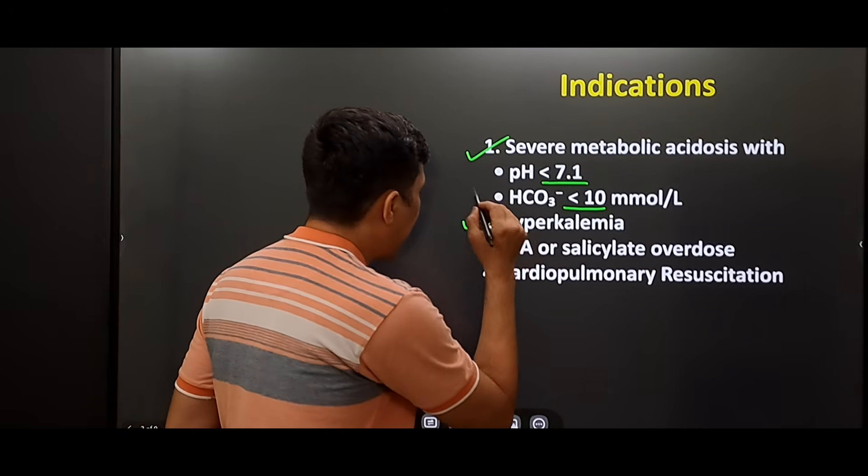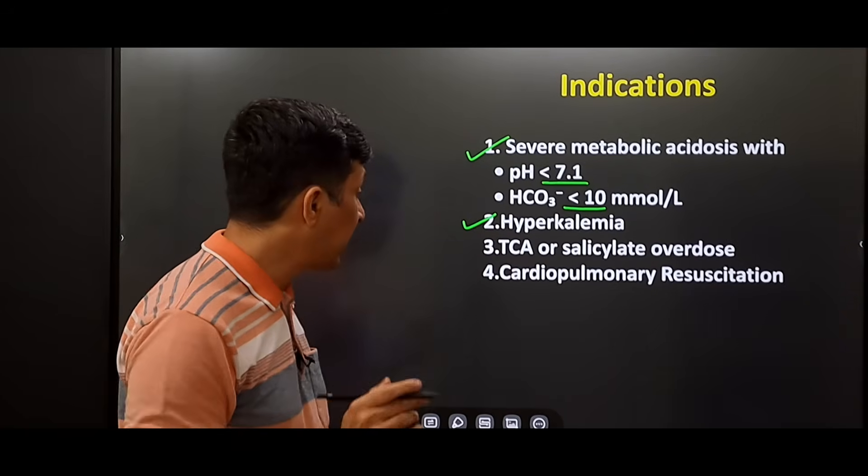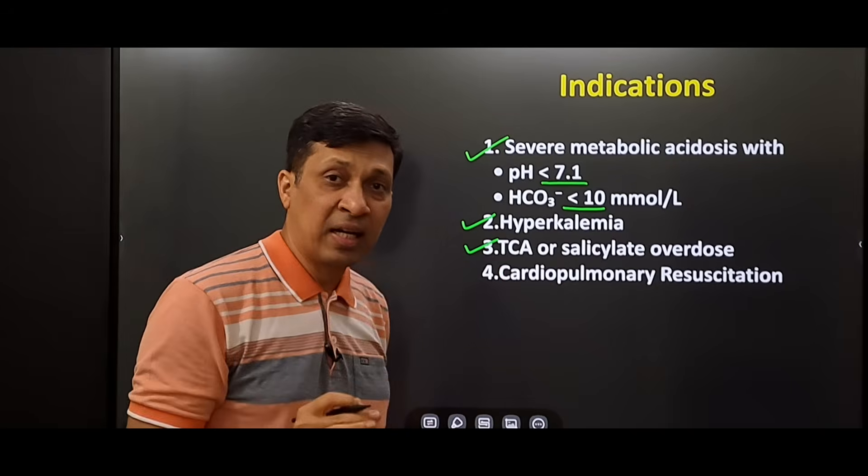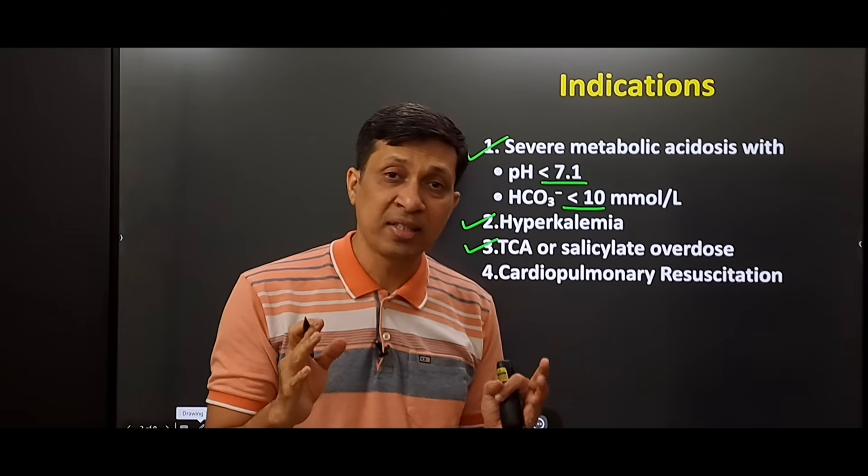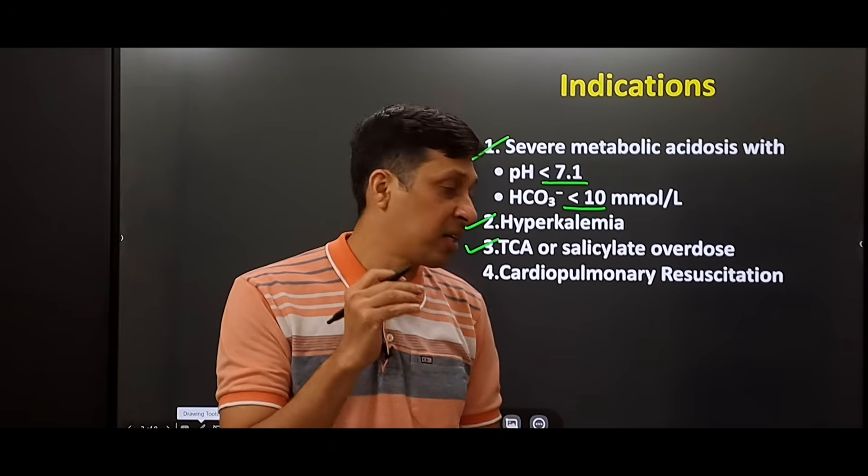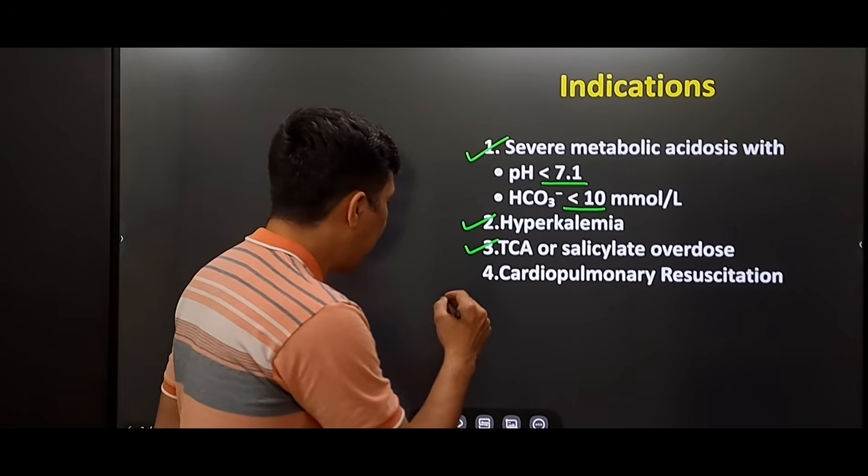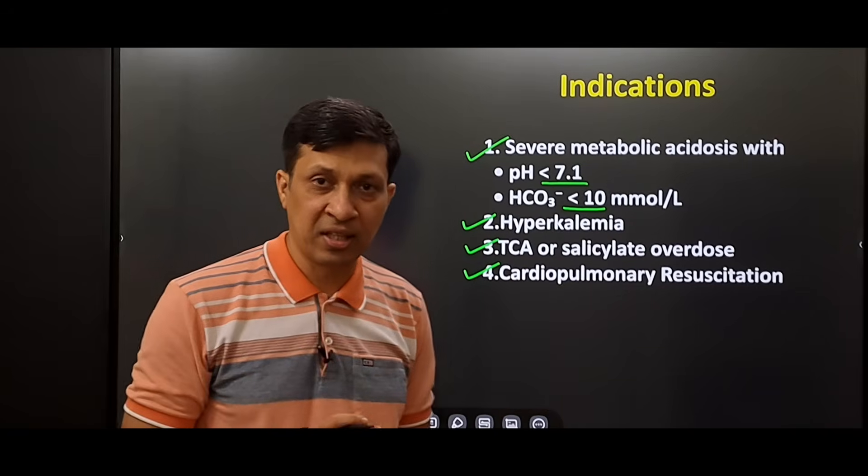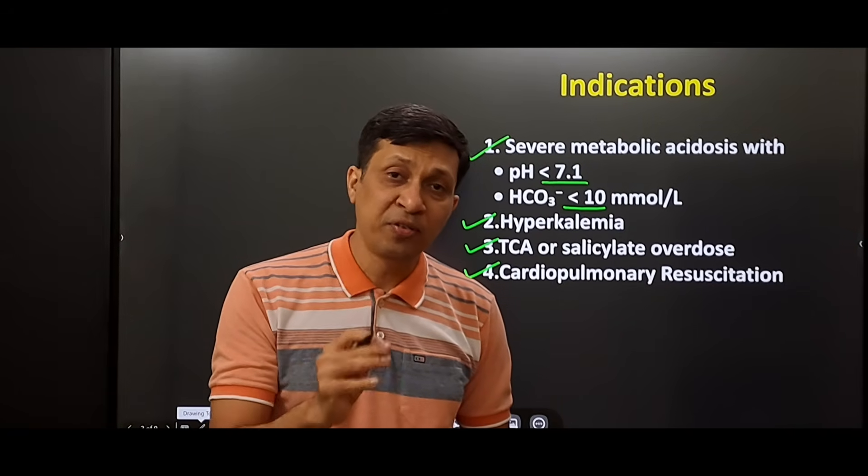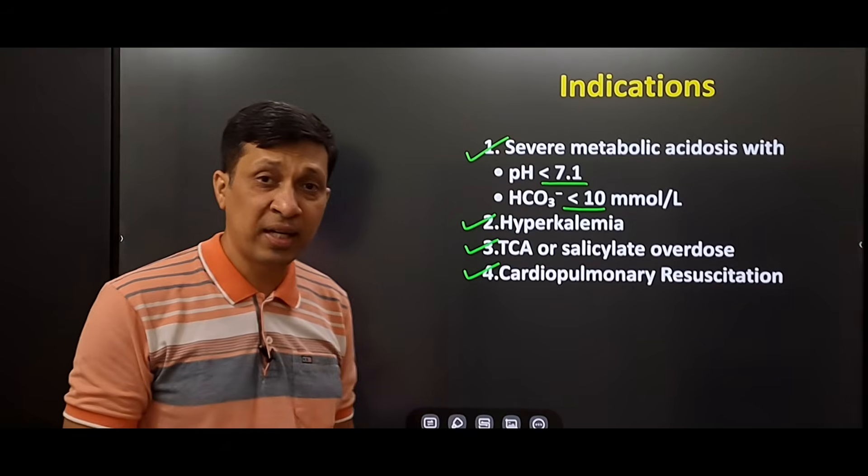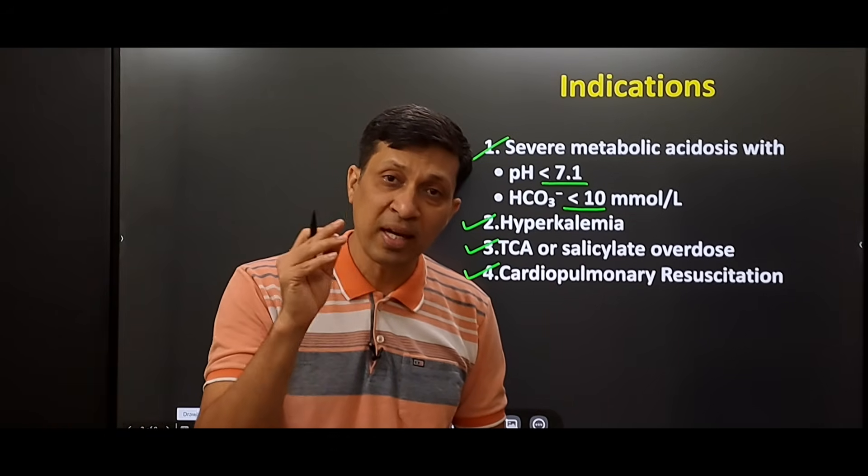The second indication is hyperkalemia. The third indication is overdose of certain drugs like tricyclic antidepressants and salicylates, where it is used in forced alkaline diuresis. The last indication is during cardiopulmonary resuscitation. In today's video, we are going to keep our focus on severe metabolic acidosis.